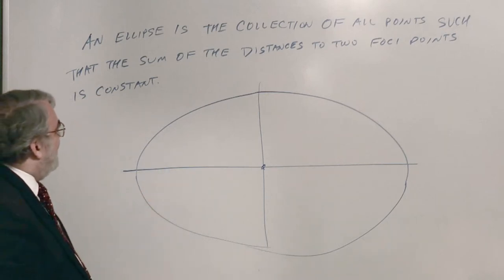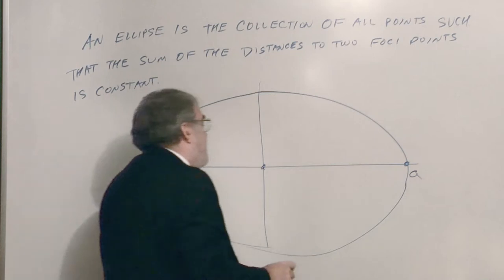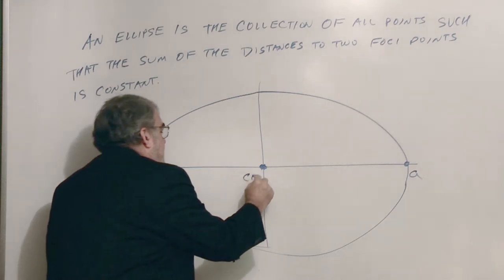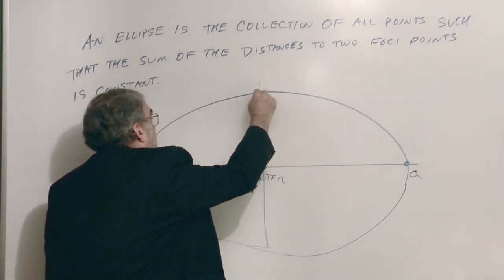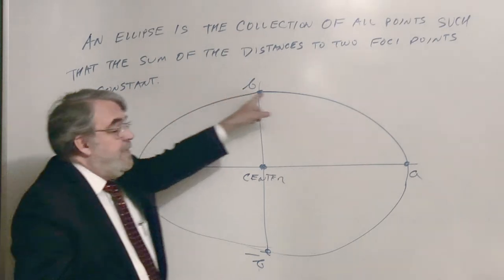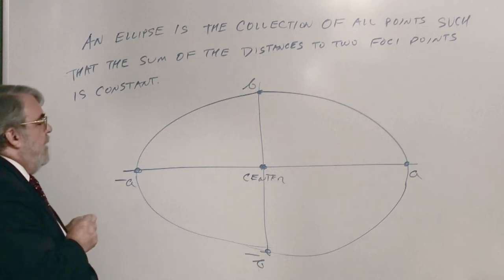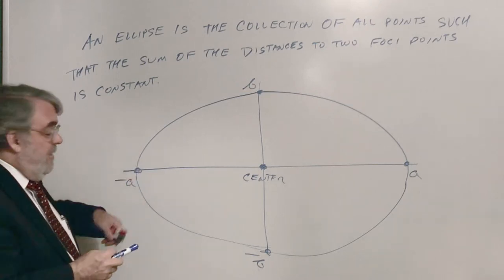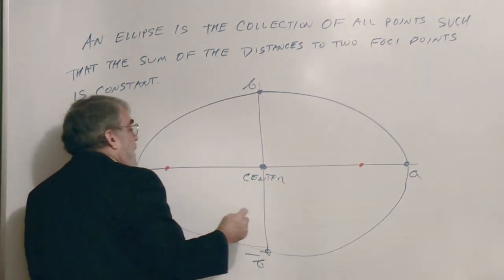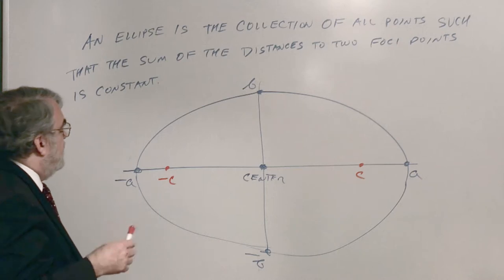Here's my best-effort sketch of the ellipse. I'll call this point A and this minus A. Here's the center. Up here I'll call this point B and this is minus B down there. These are called the vertices of the ellipse — they kind of frame it. The mysterious foci points — one's here and one's over there — I'll call these C and minus C.